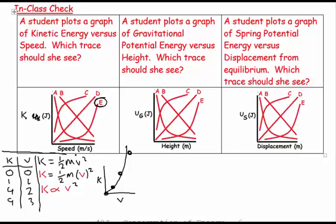Let's put a box around this work so I don't get confused and change color patterns. That always helps. And look at my second one. The second one says a student plots a graph of gravitational potential energy versus height. Which trace should she see?